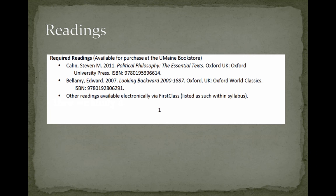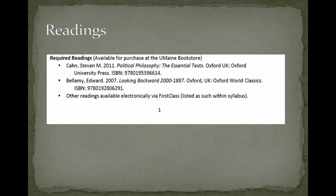There are two core texts we'll use over these three weeks. The first is Stephen Kahn, Political Philosophy: The Essential Texts from Oxford University Press, second edition. The ISBN is on your syllabus and the second edition should be available in the UMaine Bookstore. There is now a third edition with mostly the same material, so if you got the third edition that's fine — you just paid a bit more. Page numbers won't match up completely but you can figure it out based on the chapters you're reading.